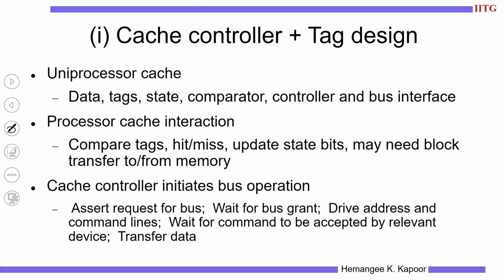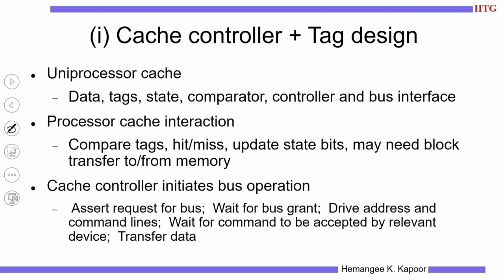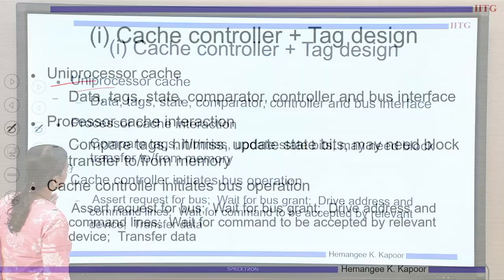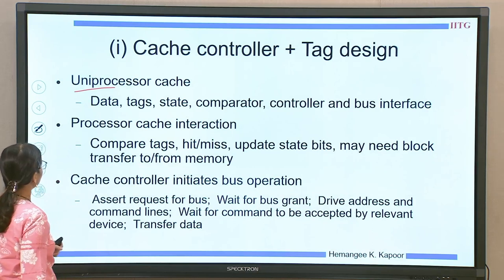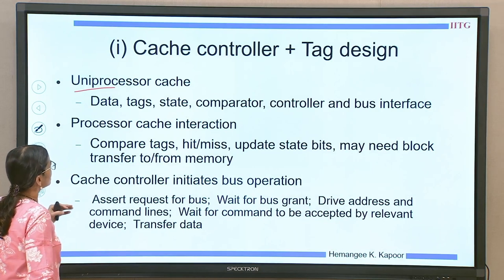We will start with the cache controller and subsequently the tag design. To understand this topic, keep relating to what the basic design is in a uniprocessor setup and what changes we are making to adapt it to a cache coherent multiprocessor setup. Let's see what happens in a uniprocessor cache so that we can incrementally change it.